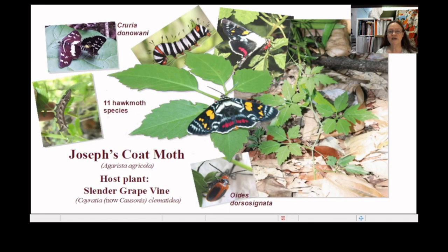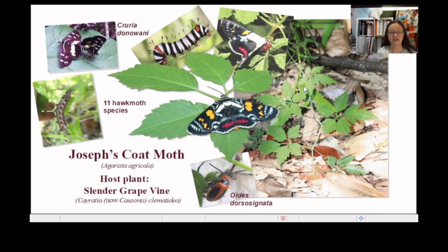Moving to another species I've done some work on: Corsinus, formerly Caratia clematidia. I've raised the life cycle of the Joseph's coat moth several times, and occasionally the Crururia donnawana life cycle. The list of hawk moths records 11 species of hawk moth larvae that use this particular plant species, so it's a pretty amazing host plant.